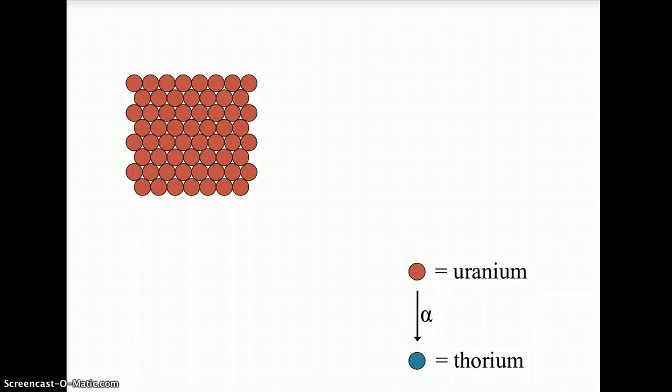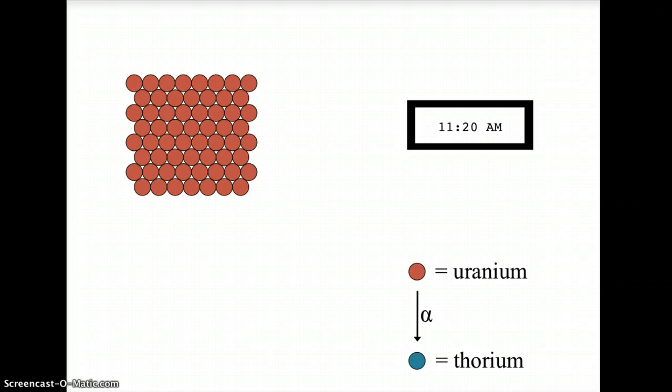Let's take as an example uranium. Uranium undergoes alpha decay, and in the process, it transmutes or changes into thorium. So, we have some initial sample of uranium. Let's say the half-life is five minutes. That's wrong. The half-life of uranium-234 is actually about 250,000 years, but for our sake, let's imagine it's five minutes.